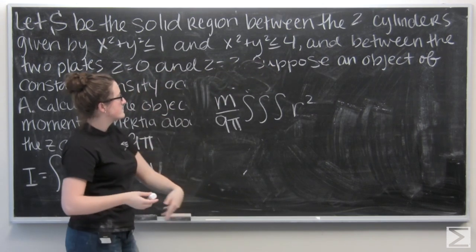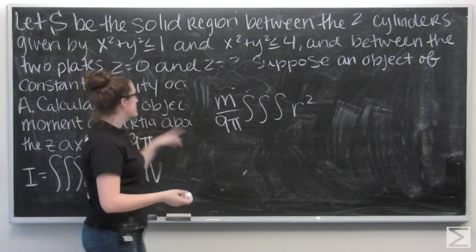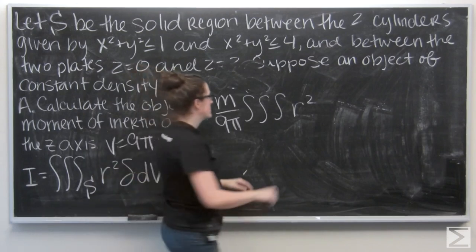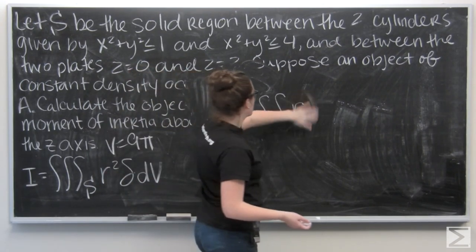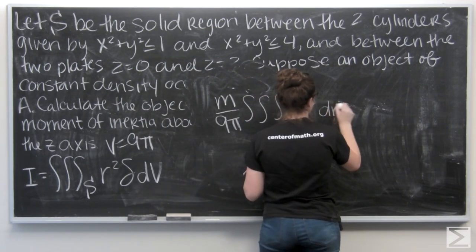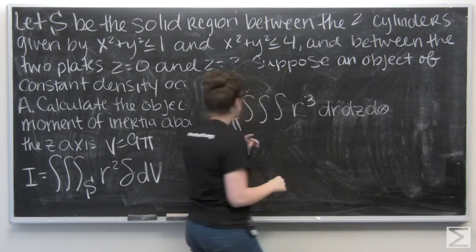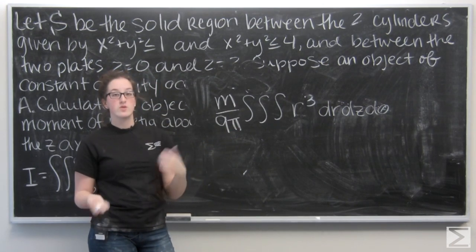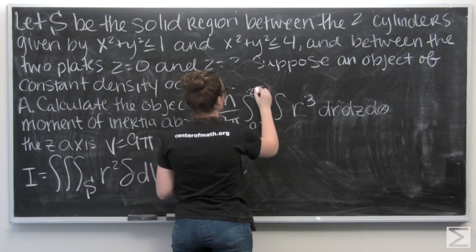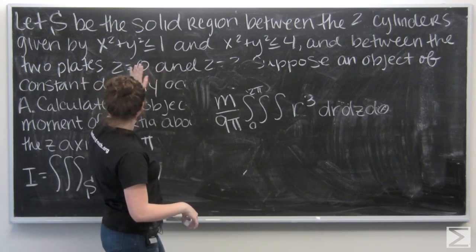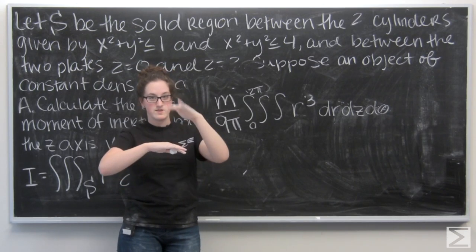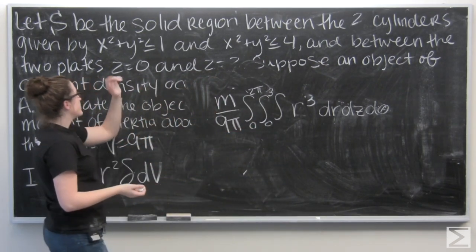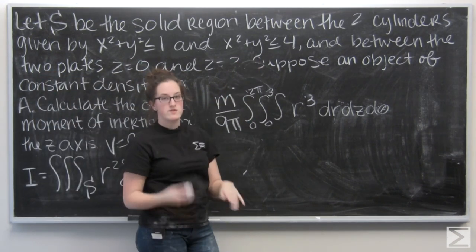Now let's talk about dV. This is a cylinder, so it makes sense to integrate in cylindrical coordinates. dV becomes r dr dz dθ, so I'm going to change that r² to r³. For the bounds: θ goes from 0 to 2π since the cylinder goes all the way around. z is given as between the two planes z = 0 and z = 3. For r, the inner cylinder has radius 1 and the outer has radius 2, so I integrate r from 1 to 2.